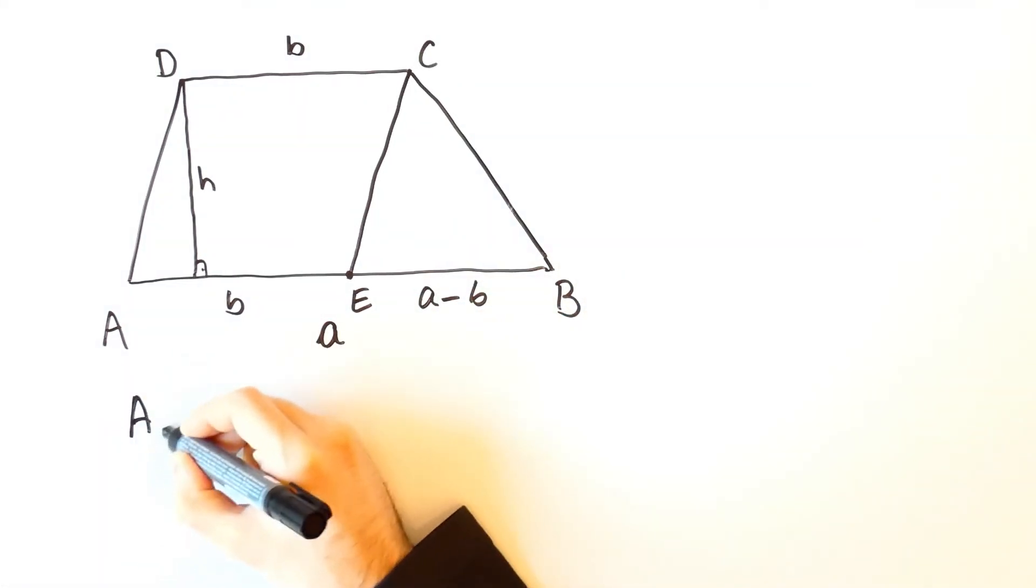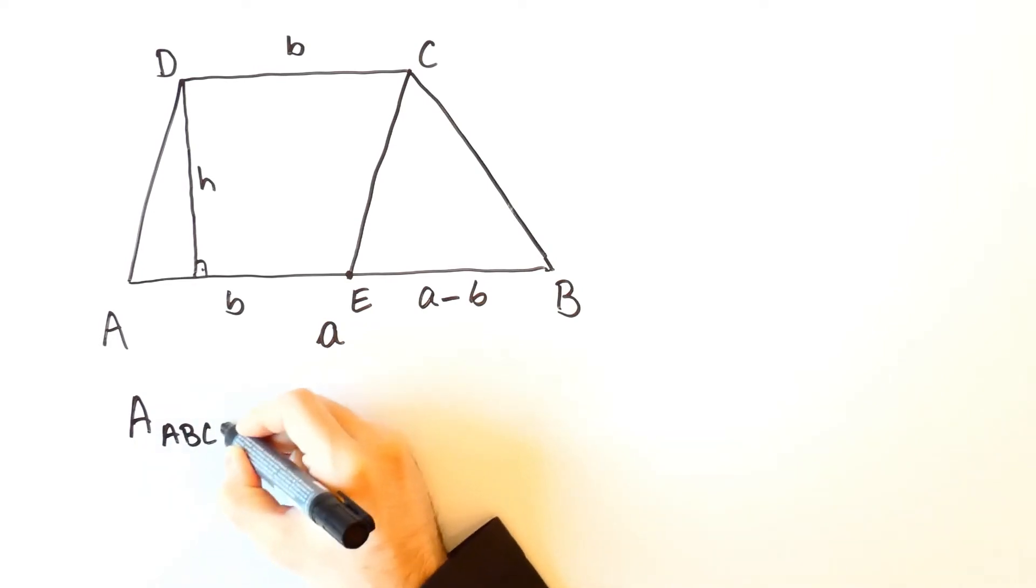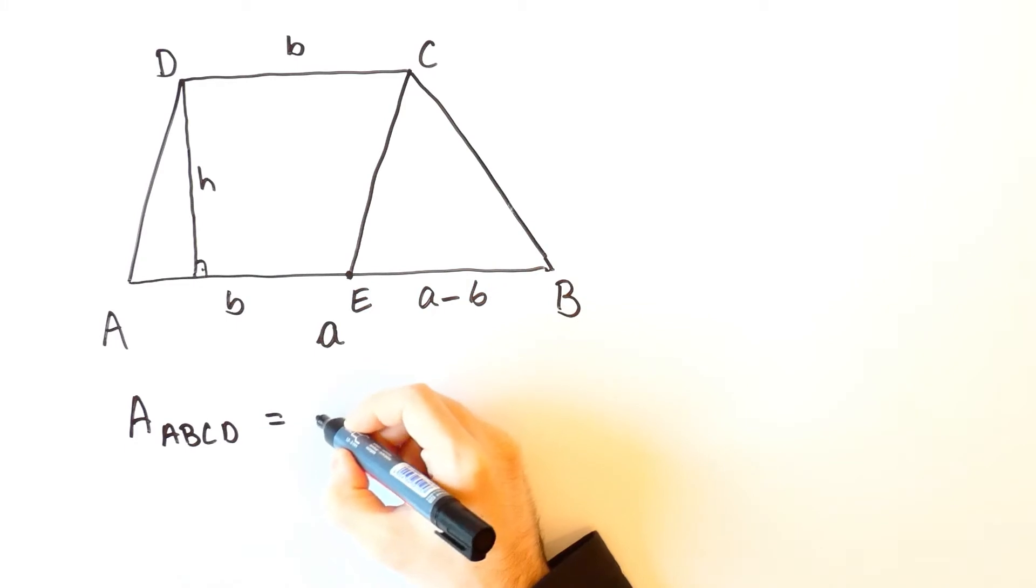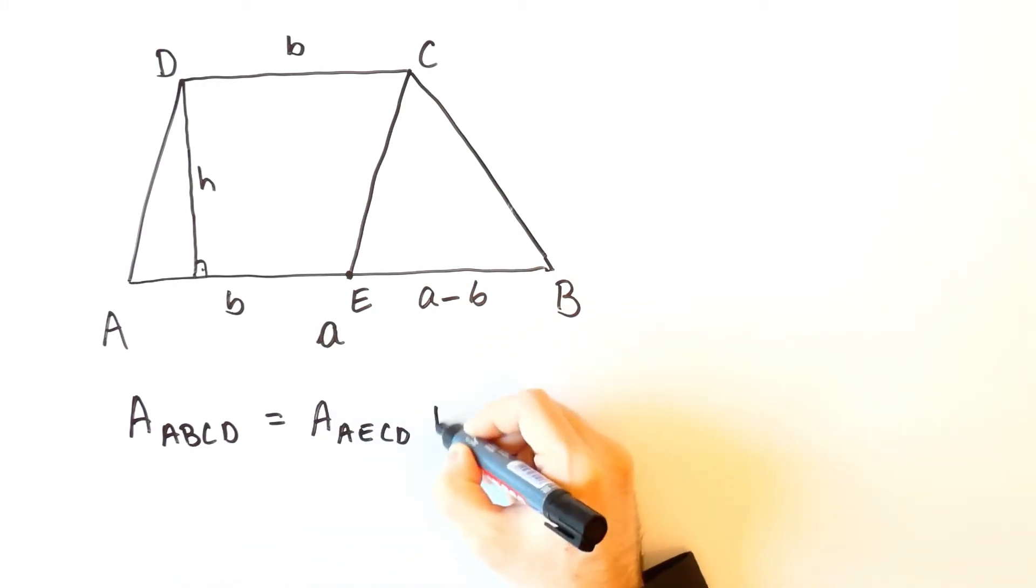The area of the trapezium ABCD is equal to the area of the parallelogram AECD plus the area of the triangle EBC.